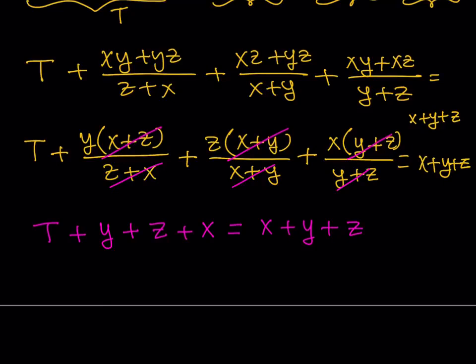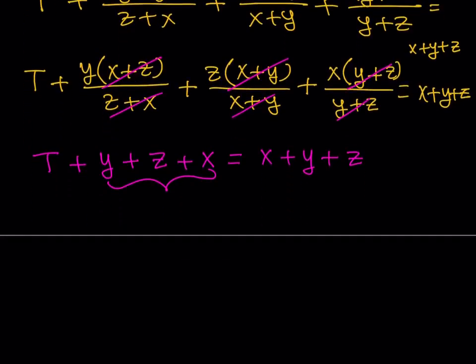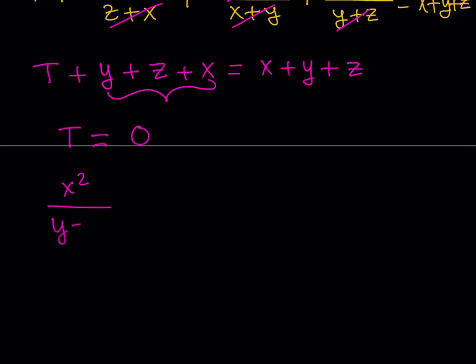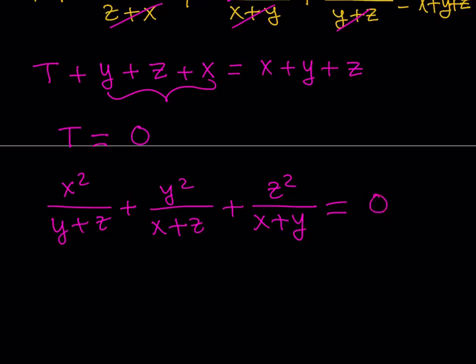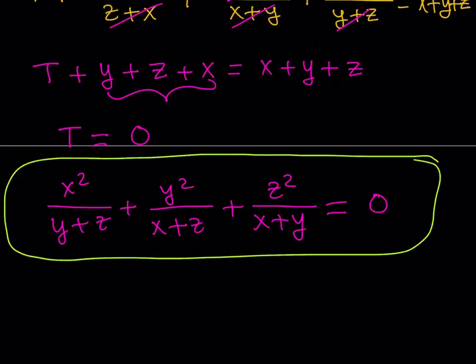So what is t equal to? When you subtract (x plus y plus z) from both sides, y plus z plus x is the same as x plus y plus z, so t equals zero. And t is x squared over (y plus z) plus y squared over (z plus x) plus z squared over (x plus y) — and apparently it equals zero. That brings us to the end of this video. Thank you for watching; don't forget to comment, like, and subscribe. I'll see you in the next video. Until then, be safe and take care. Bye bye.